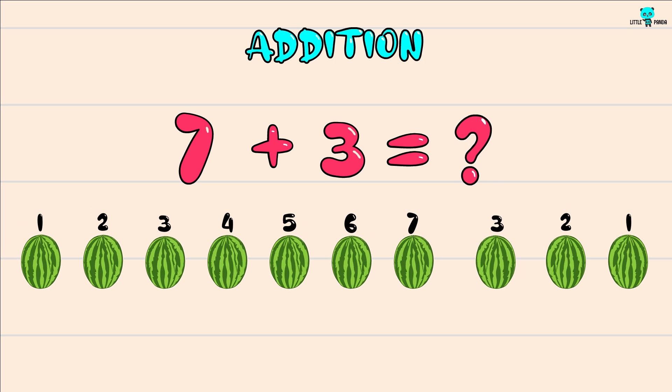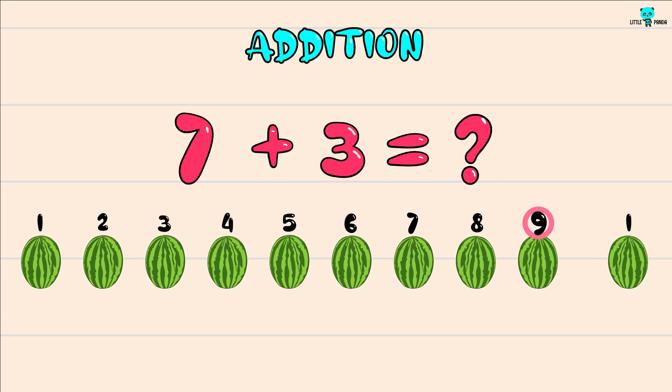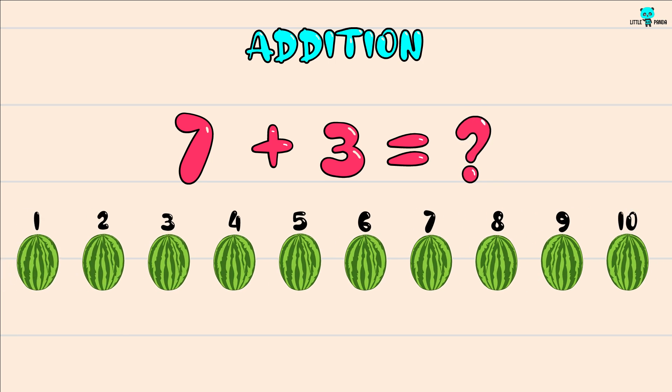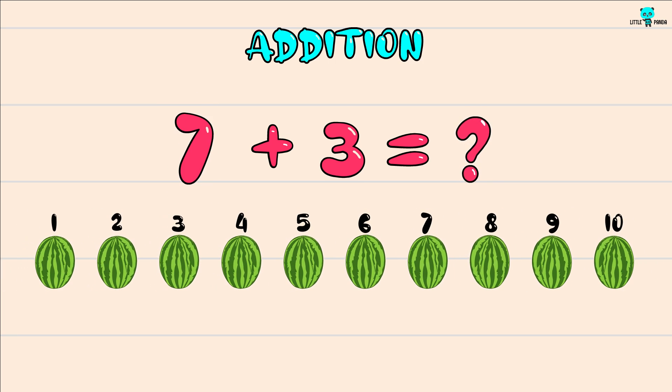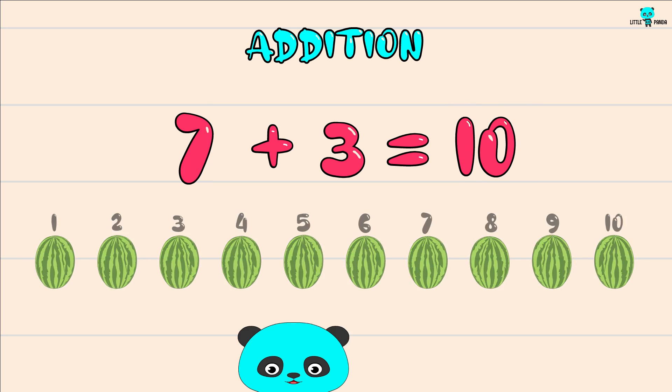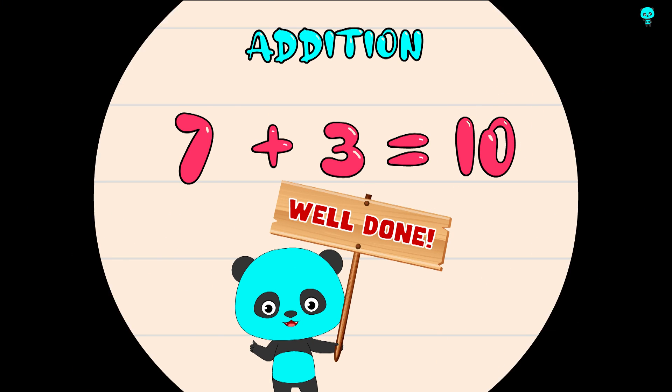Make 7, 8, 9, 10. 10 watermelons. 7 plus 3 equals 10. Well done.